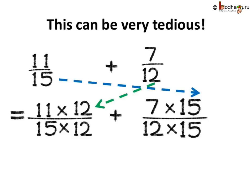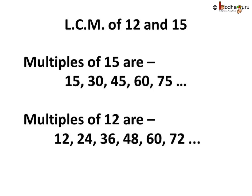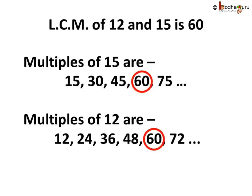Yes, there is. We already know how to find the LCM, which is the least common multiple. So the simplest way here is to find the LCM of the two denominators, which are 15 and 12. The multiples of 15 are 15, 30, 45, 60, 75, etc. And the multiples of 12 are 12, 24, 36, 48, 60, 72, etc. The least common multiple, or LCM, of 15 and 12 is 60.